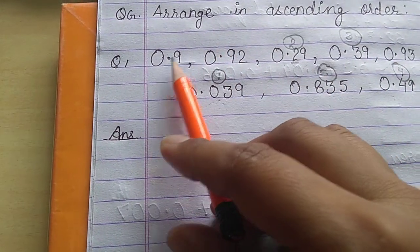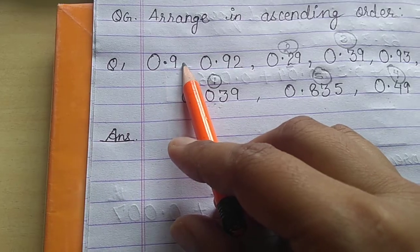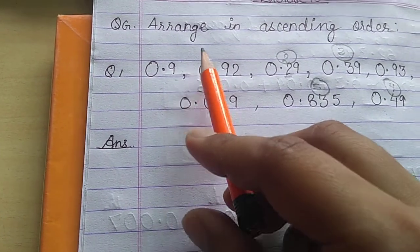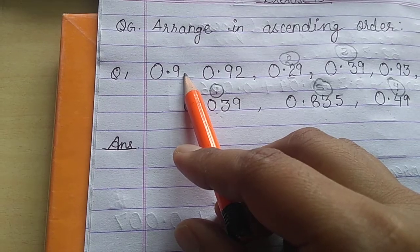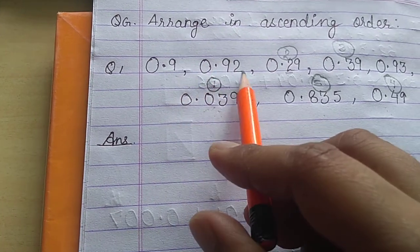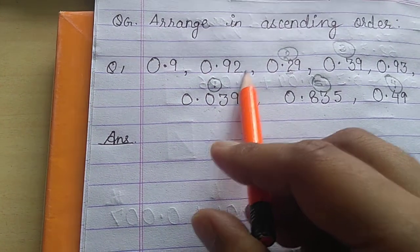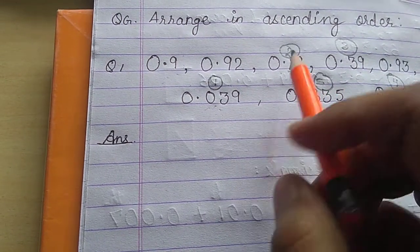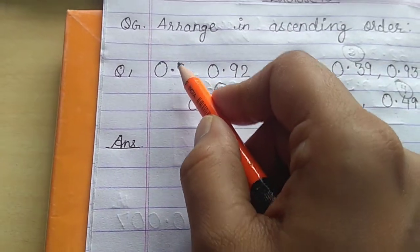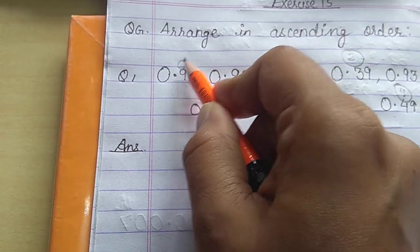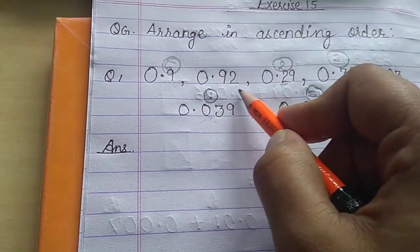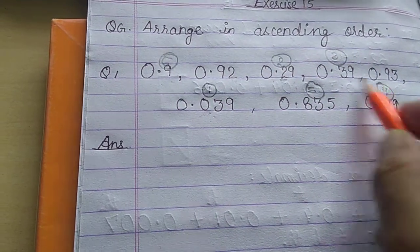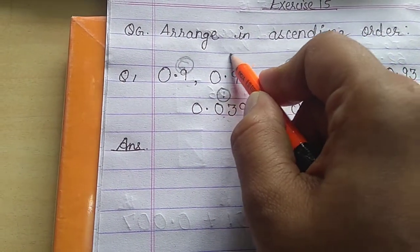We will compare the next place after the decimal — the hundredths place. Here, we have no digit at the hundredths place, which means it will be considered as 0. At the hundredths place, we have 2 and then we have 3. So 2 is smaller than 3, meaning the sixth place will be 0.9 with no hundredths digit, then 7th place has hundredths digit 2.